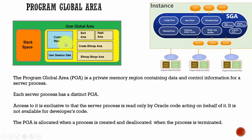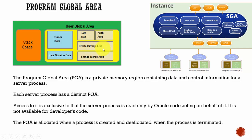Cursor state is used whenever Oracle has to deal with cursors. The user session data is used to store the control information about a session. The sort area is used for sort operations whenever a user runs a SQL statement with an ORDER BY or GROUP BY. The hash area is used whenever the Oracle database has to perform hash joins. The create bitmap area is used when Oracle database is creating bitmap indexes, and the bitmap merge area is used to resolve the bitmap index plan execution.